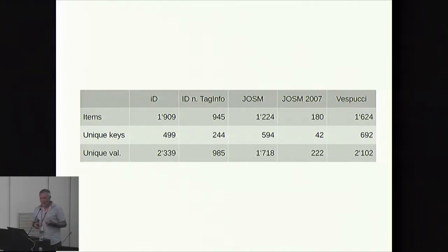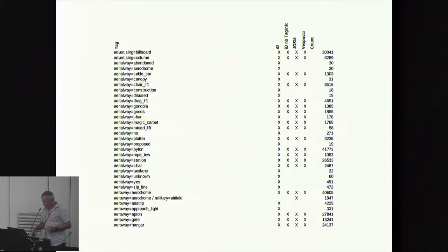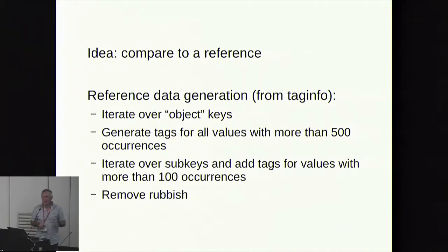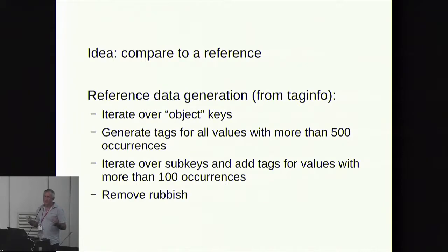What you get is a big spreadsheet with tags and which preset they belong to — but that's a quantitative measurement, not a qualitative one. So I had the idea to compare this to a reference. I iterated over all object keys and generated tags for all values used more than 500 times in the database, and did something similar for subkeys. Then I removed rubbish — which is quite a fair bit.